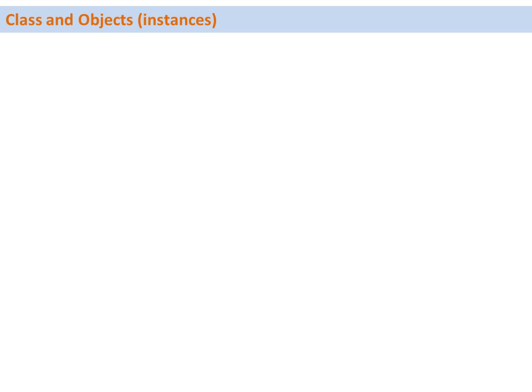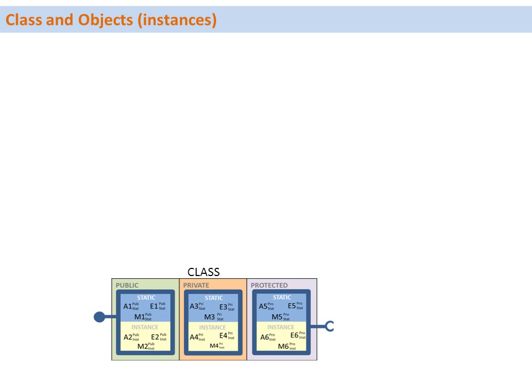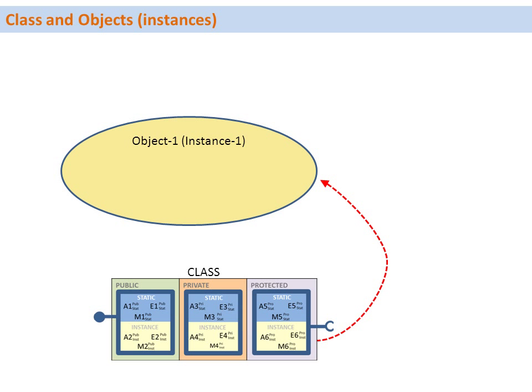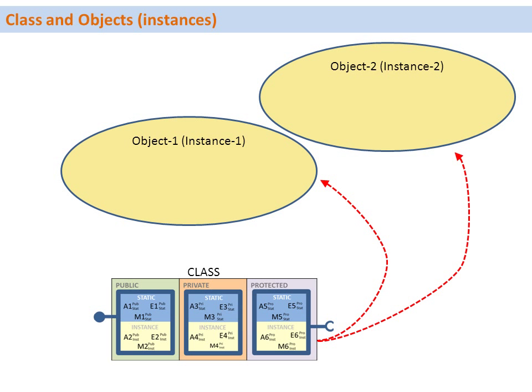Let's have a look at how we can create several objects from a class. We have a class with a public section, protected section and private section, as well as static components and instance components. In the programming code we can use the statement CREATE OBJECT to create several instances from this class. Each instance is called an object — so we have object 1, object 2, and so on. We can have any number of objects.